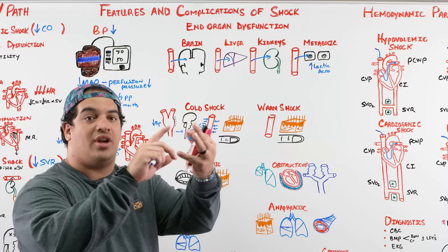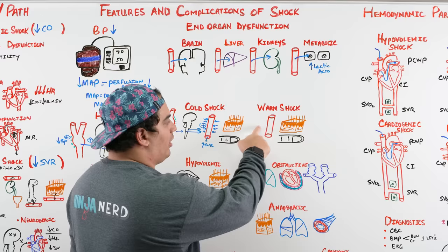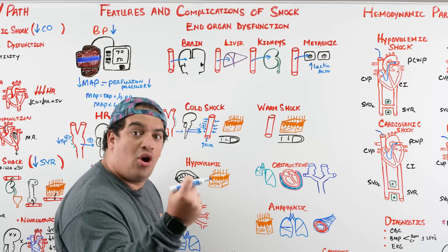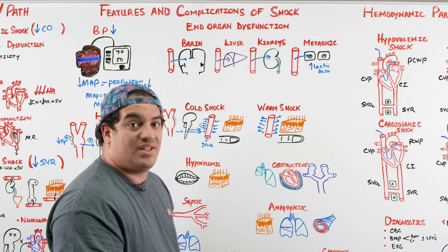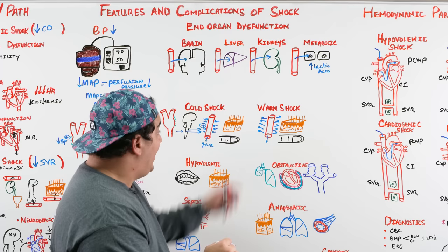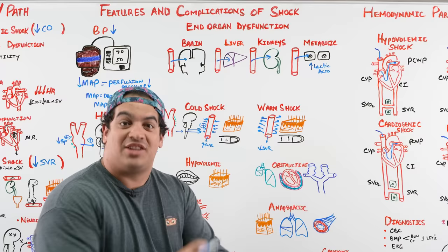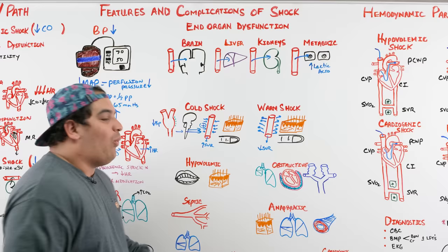Warm shocks are seen in distributive shocks — septic, anaphylactic, and neurogenic. In these vasodilatory states, SVR is low, blood flows freely to the skin and nail beds, giving patients warm, pink or reddish skin and good capillary refill. This reflects the hyperdynamic, vasodilated state.